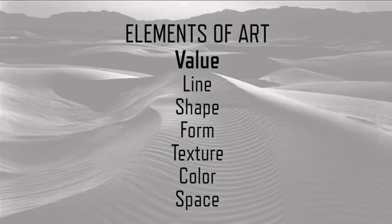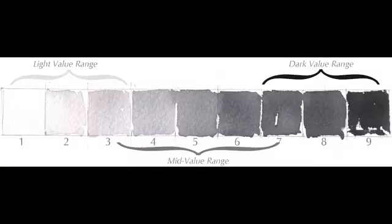Along with line, shape, form, texture, color, and space, value is how light or dark a given color or hue is. Values can be better understood when they are visualized as a scale or a gradient. Here's the value scale for this gray tone — it ranges from pure white to absolute black with a number of gray tones in between.